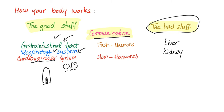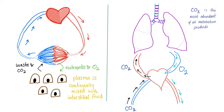Then we have the bad stuff — the waste products. The liver and the kidney will deal with this junk. For communication, fast communication, you have the neurons — very fast. For slow communication, you will need stuff called hormones. The heart pumps blood into arteries, which go into capillaries or capillary beds. Exchange occurs with the cells — blood gives cells nutrients and oxygen and takes the waste products and CO2. Plasma, which is in the blood, is continually mixed with the interstitial fluid between the cells.